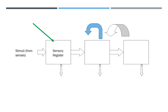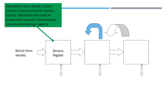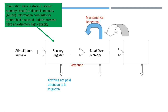Stimuli go to the sensory register, which is visual and sound — iconic and echoic — lasts for around half a second, high capacity. Anything not paid attention to is forgotten. Attention must be paid to get information from the sensory register to the short-term memory, which is kept there by maintenance rehearsal. Capacity is seven plus or minus two (five to nine items), duration around 18 seconds from Peterson and Peterson, and coding is acoustic as found by Baddeley.